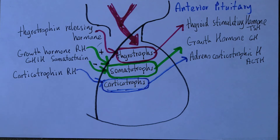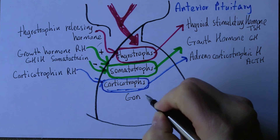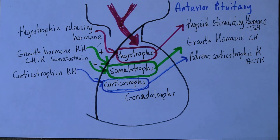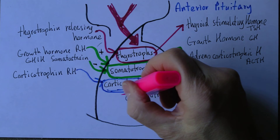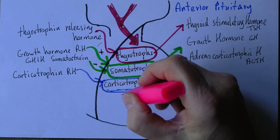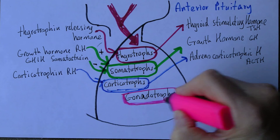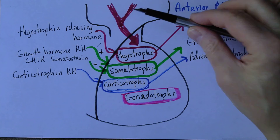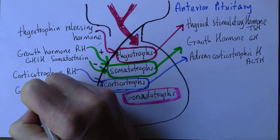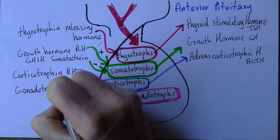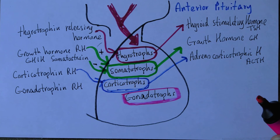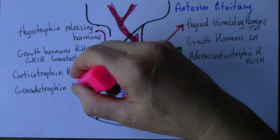There are also cells called gonadotrophs — separate cells in the adenohypophysis. Their release is stimulated by the releasing hormone from the hypothalamus called gonadotrophin-releasing hormone. When gonadotrophin-releasing hormone is produced by the hypothalamus, it passes down the portal system to the adenohypophysis — the anterior pituitary gland — and stimulates the gonadotrophs.